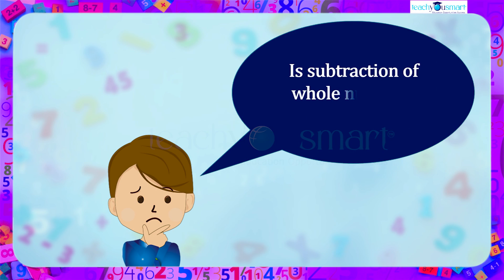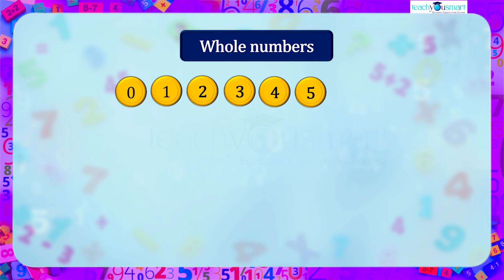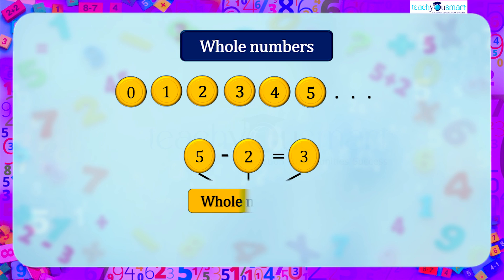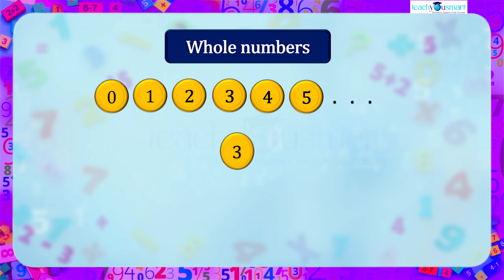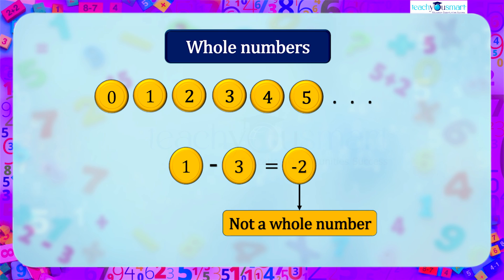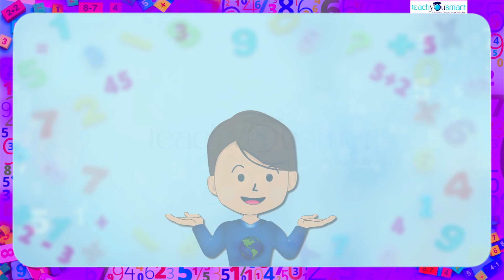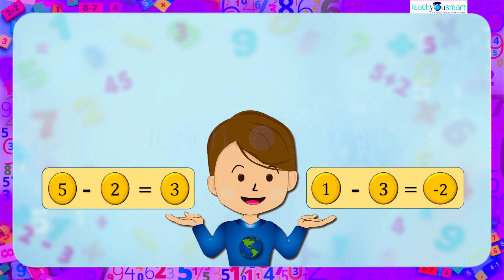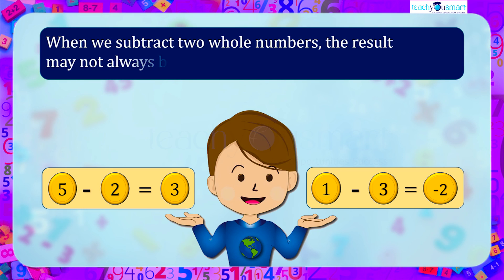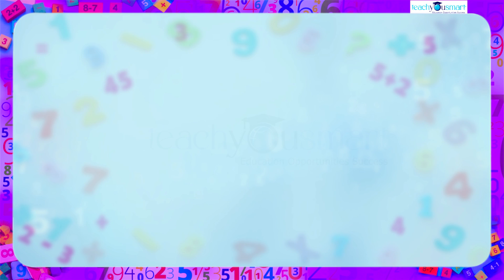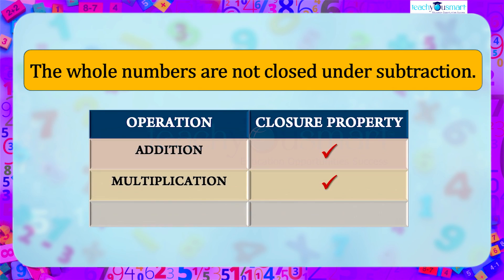Is subtraction of whole numbers closed or not? When we subtract 2 from 5 we get 3, which is also a whole number. But when we subtract 3 from 1 we get −2, which is not a whole number. From these two examples we understand that when we subtract two whole numbers, the result may not always be a whole number — that is, whole numbers are not closed under subtraction.